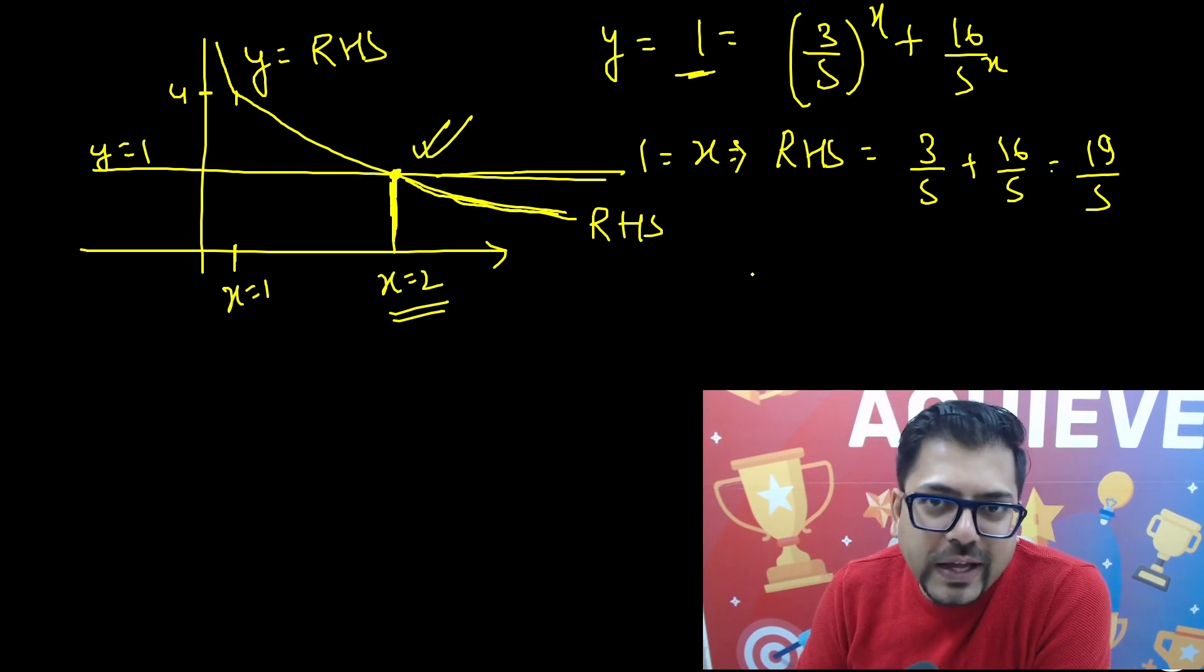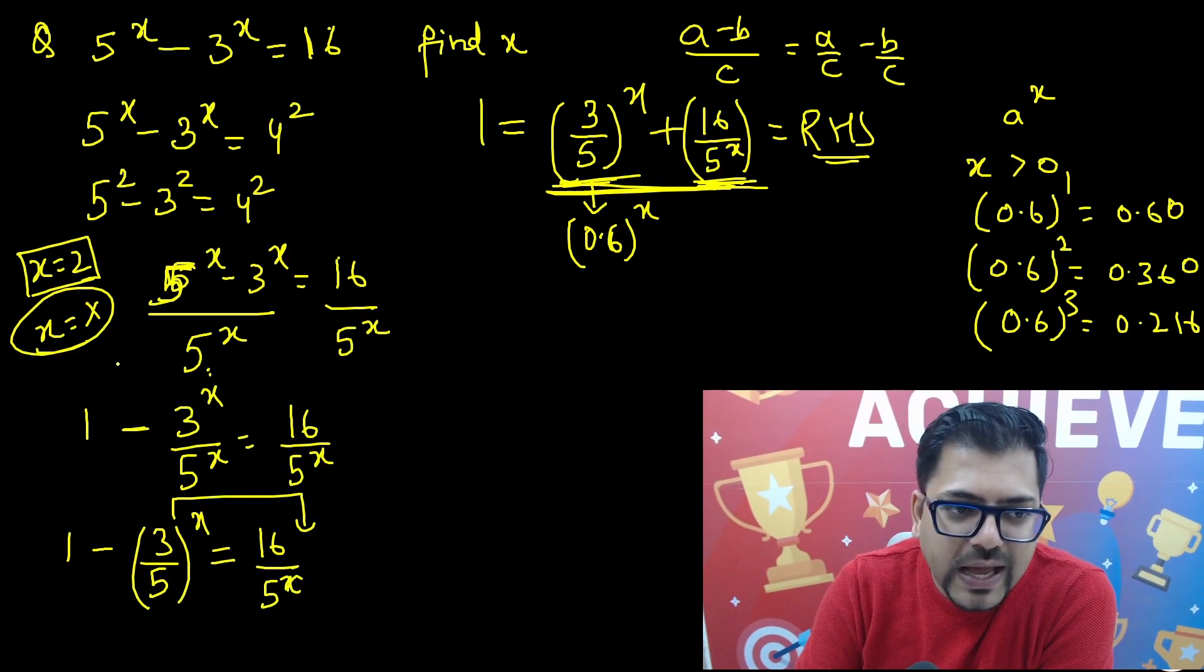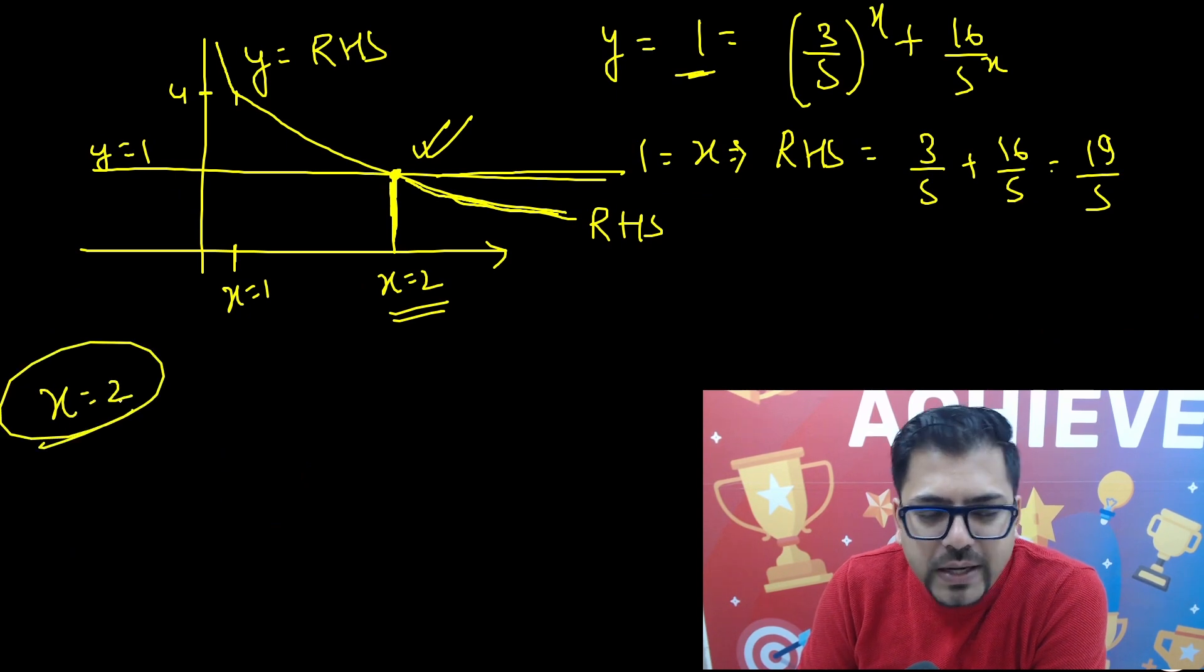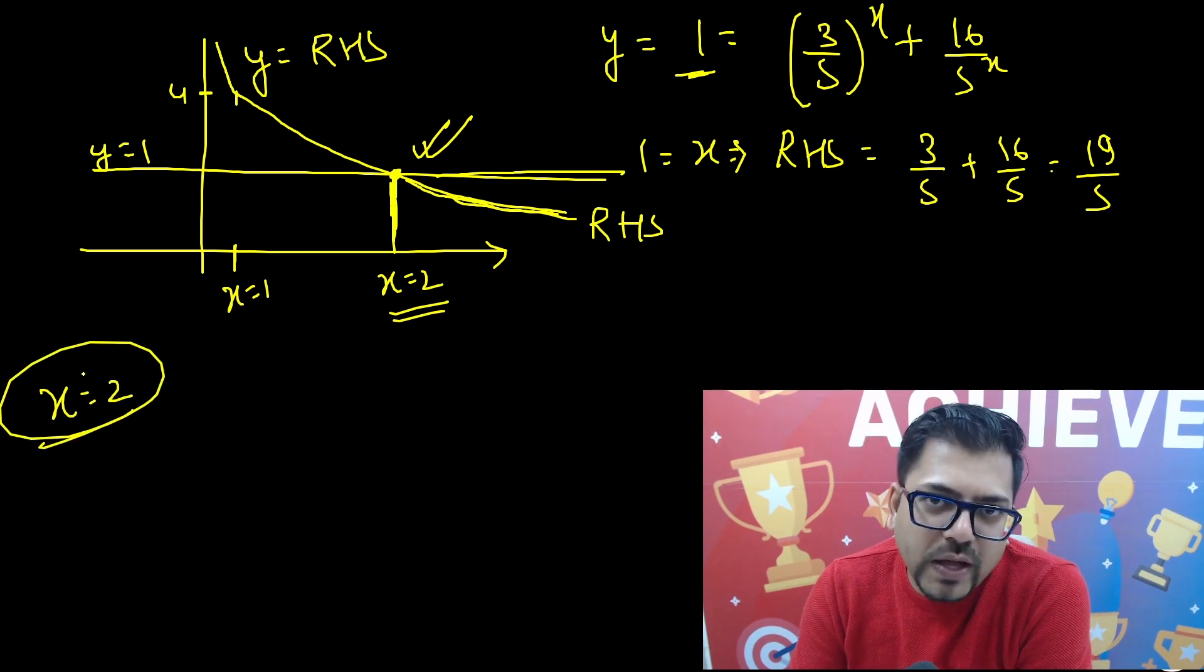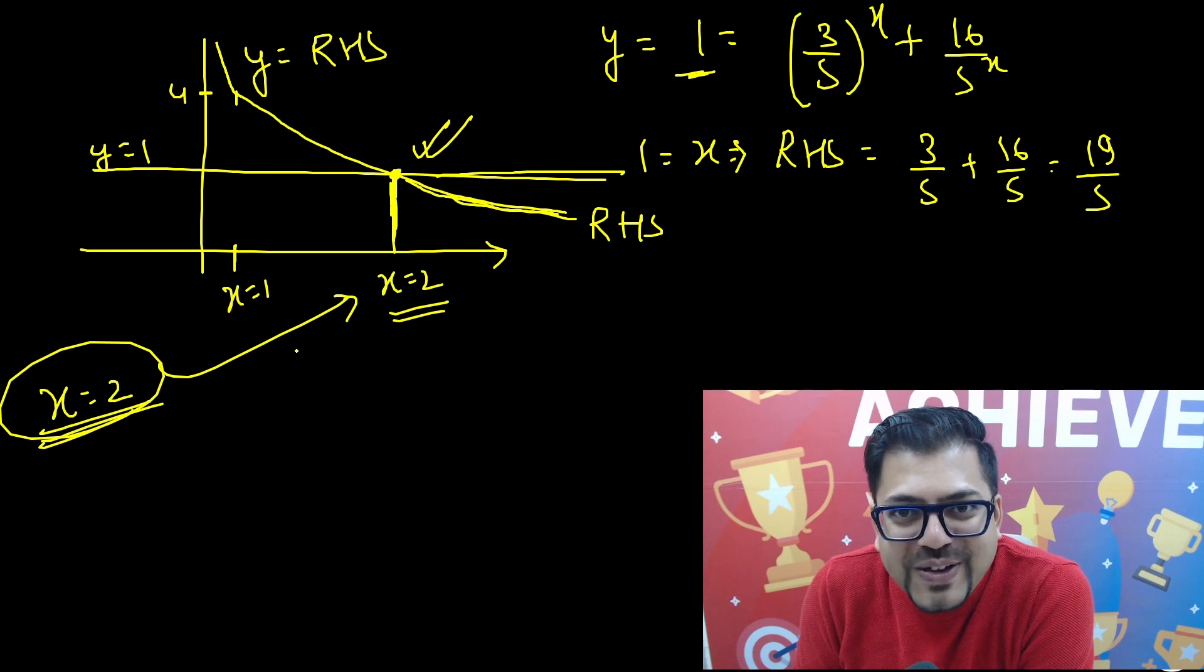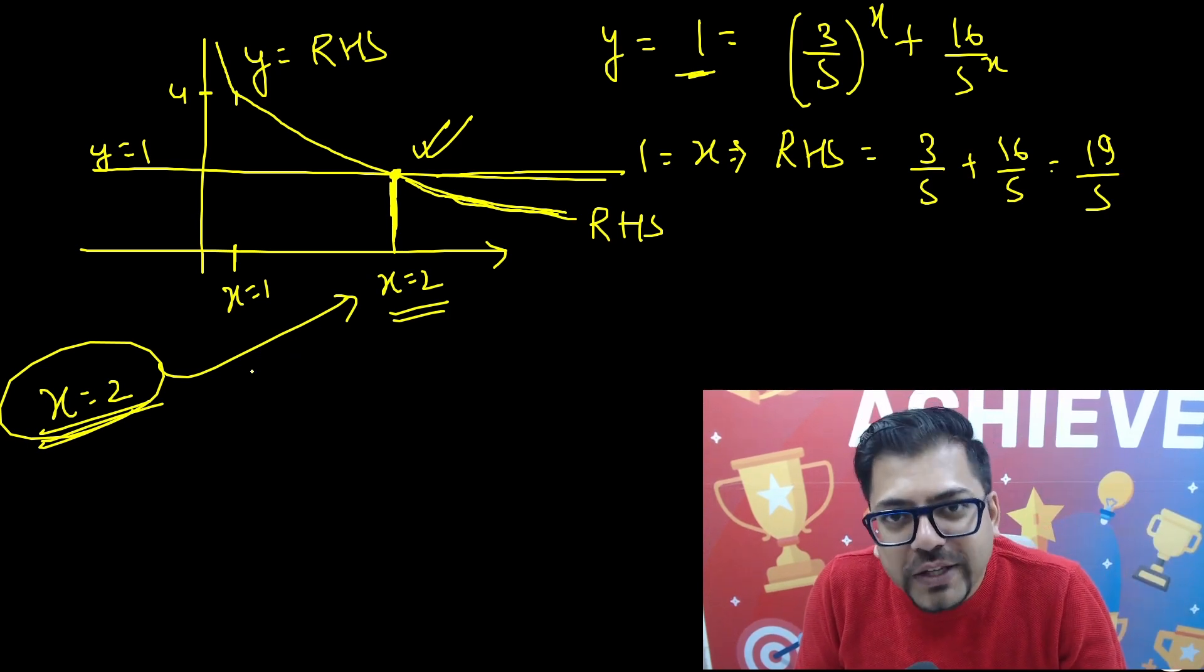Hence we have got the answer. And along with a proper explanation that this question has a simple solution: x equals 2. You could have used hit and trial or other methods. But x equals 2 is the very simple answer. And why only one answer? Because of the graph. I hope you liked and enjoyed the video. Do let me know in the comment box.